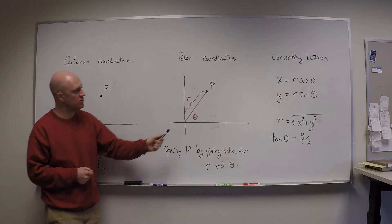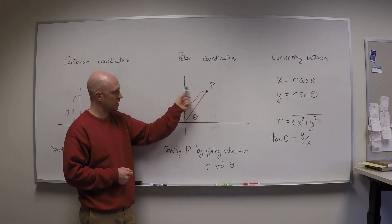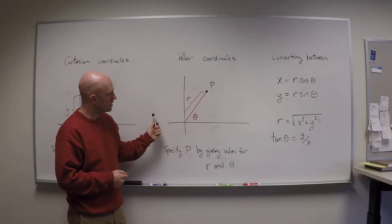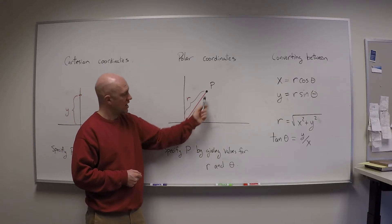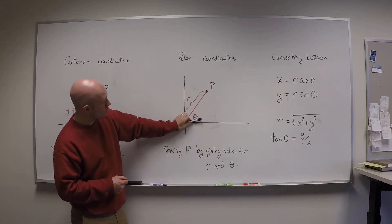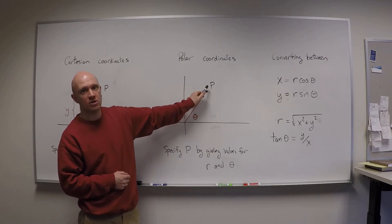Well polar coordinates are another way of specifying a point. We keep the x and the y-axis here just for reference to kind of see where we are. And then this time instead of saying I have to go over x and up y, I say that I have to go through an angle of theta and then out a distance of r from the origin.